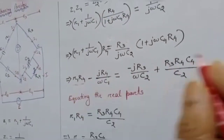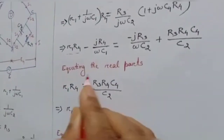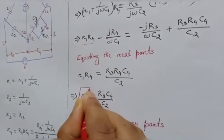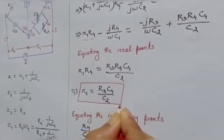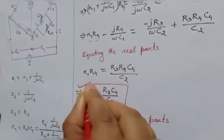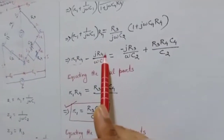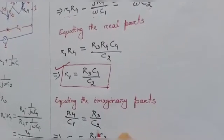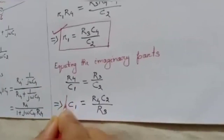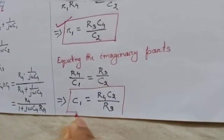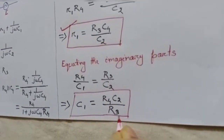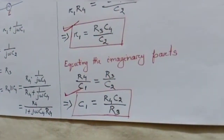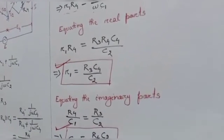Equating the real parts — R1·R4 and the corresponding terms — we get the value of unknown resistance R1 equals R3·C4 divided by C2. From the balance equation, equating the imaginary parts, we find the unknown capacitance C1 equals R4·C2 divided by R3. These are the two unknown quantities we determine from this bridge.